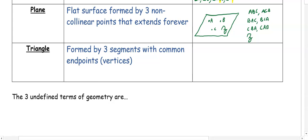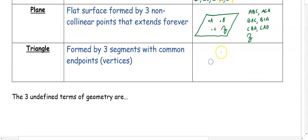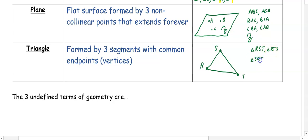A triangle is formed by three segments with common endpoints as vertices. With points R, S, and T, when naming the triangle we use the triangle symbol and three letters. The order of the letters does not matter, so we can name it triangle RST, triangle RTS, triangle SRT, triangle STR, triangle TRS, or triangle TSR — any of those work.